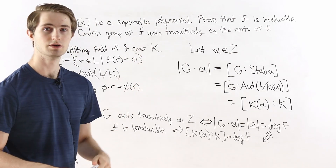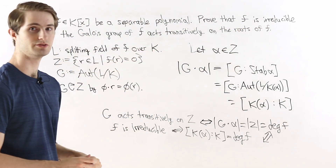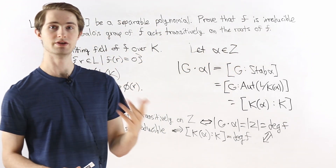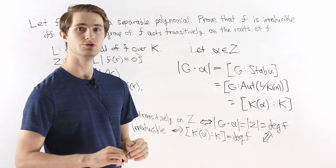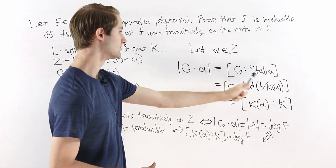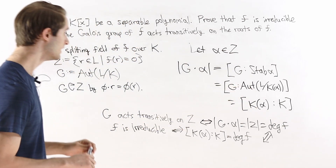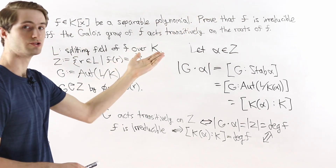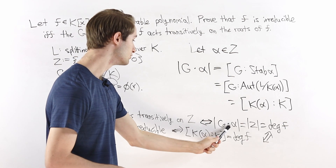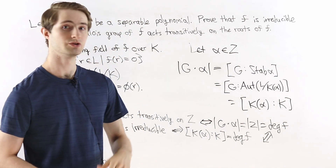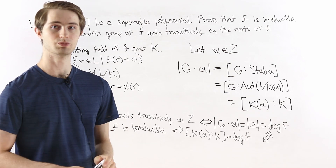There is another approach: prove each direction separately — suppose f is irreducible and show the action is transitive, then suppose f is reducible and show it's not transitive. But this proof is particularly elegant because it uses the orbit-stabilizer theorem and a Galois theory result about the index of field extensions versus automorphism groups, and reveals that both statements are really asking whether the same number equals deg(f).